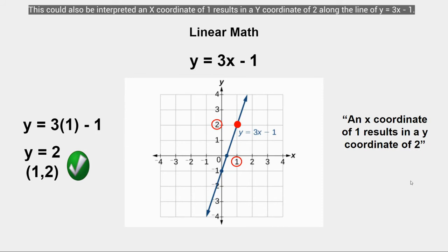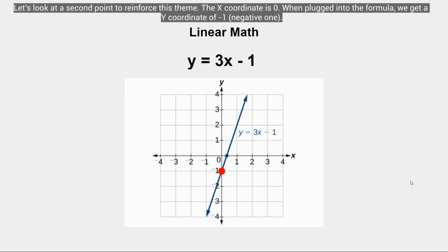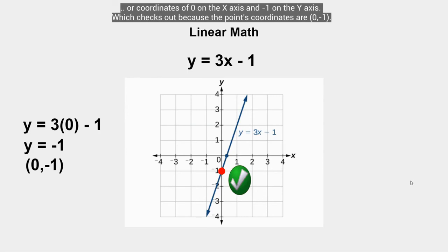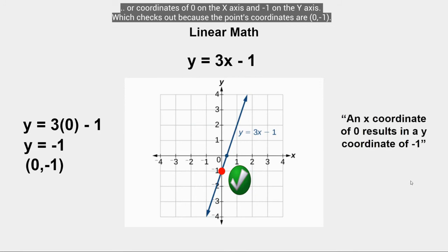This can be interpreted as: an x coordinate of 1 results in a y coordinate of 2 along the curve specified by y = 3x − 1. For the second point, the x coordinate is 0. Plugging that into the formula: 3(0) − 1 = −1, so y = −1, giving coordinates of (0, −1). This checks out because the point's coordinates are zero on the x axis and negative one on the y axis.